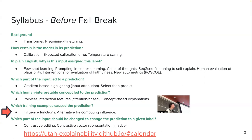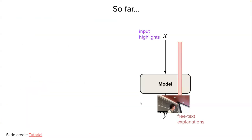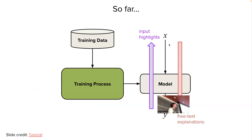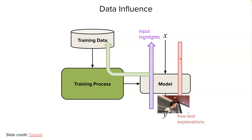Now we are moving to yet another way of approaching the question of why the model made a certain prediction. So far we have been looking at free text explanations or input highlights — mechanisms of input and output. However, another part of the model responsible for its overall behavior is the training process. What did the model see during training is going to influence what the model does when it makes a prediction. So we are going to try to find what kind of data points influenced the model's prediction.